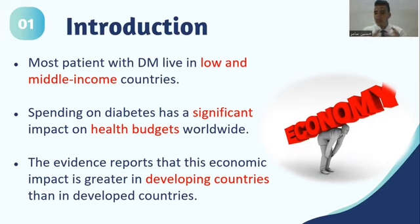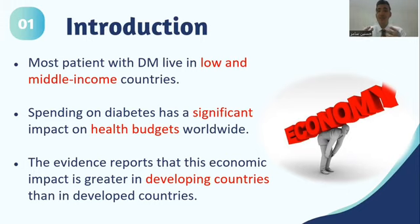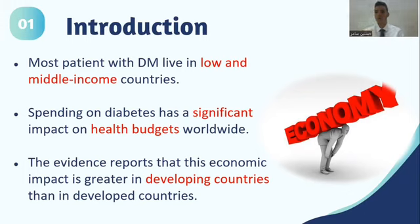HbA1c is a parameter considered for frequent monitoring to follow up patient response to their medications. In addition, DM patients may have significant complications — microvascular or macrovascular — all of which are related to economic burden. Economic burden describes costs related to health resource utilization and loss of work.